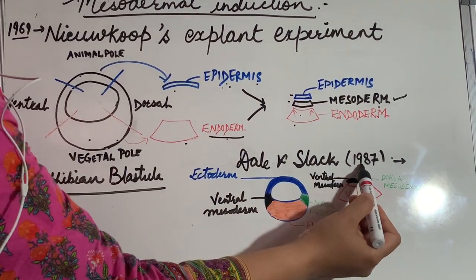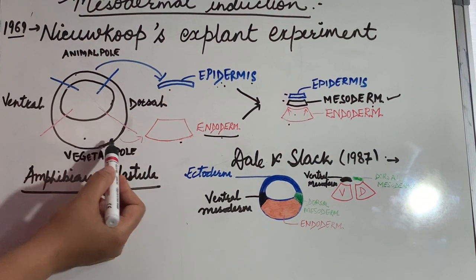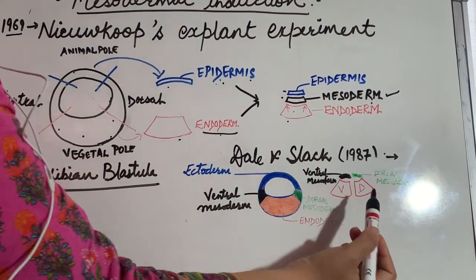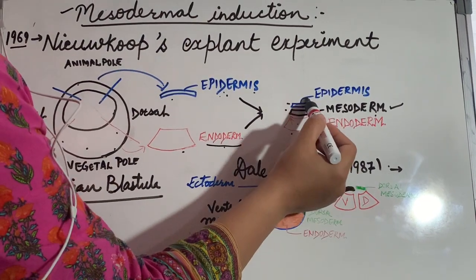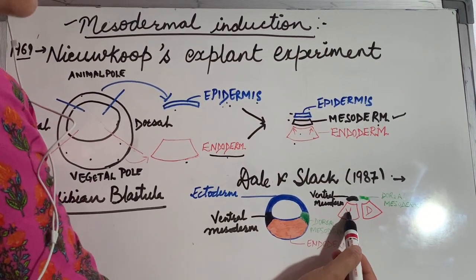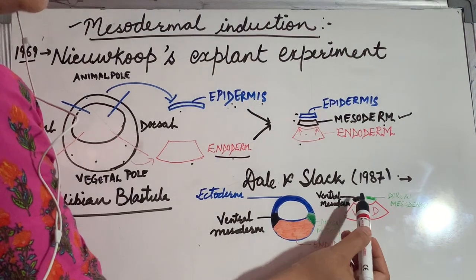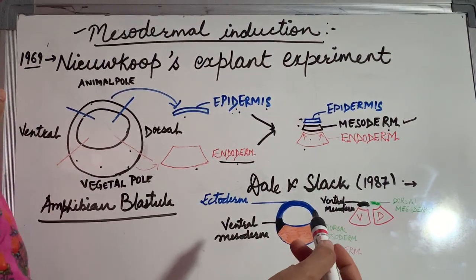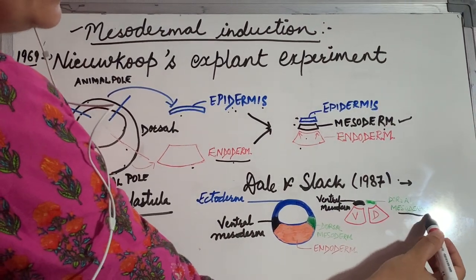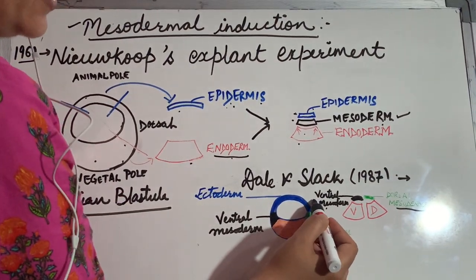Then Dale and Slack in 1987 conducted another experiment and proposed that the vegetal cells are of two types: dorsal vegetal cells and ventral vegetal cells. The dorsal vegetal cells, when they come in contact with the epidermal cells, induce them to develop into the dorsal mesoderm. The ventral endodermal cells induce the epidermal cells to develop into the ventral mesoderm. The dorsal mesoderm gives rise to the notochord and muscle cells, while the ventral mesoderm gives rise to blood cells.